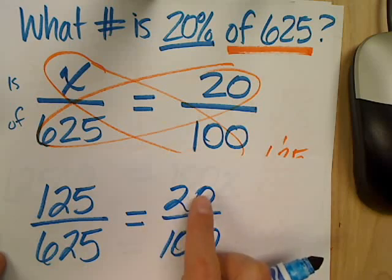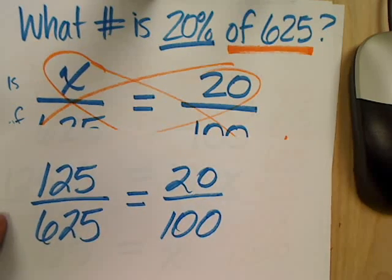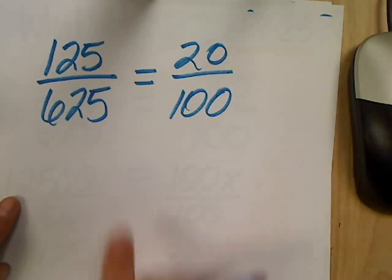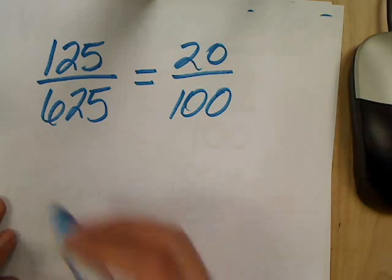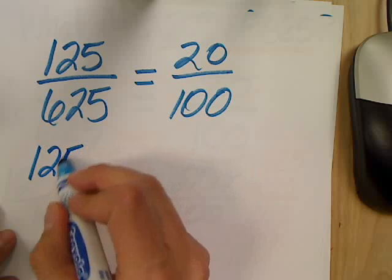Now, if I cross multiply, the two numbers should be exactly the same. Okay, so 625 times 20 is what we already worked out, and we said that was 12,500.